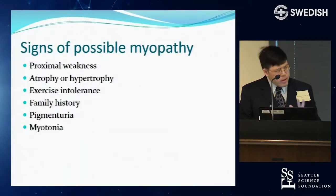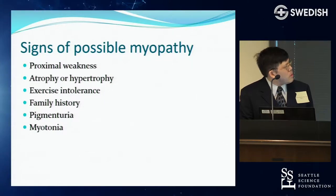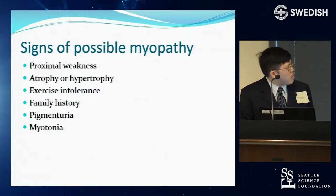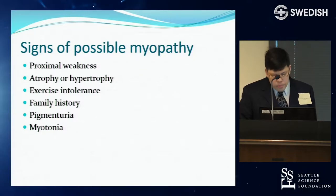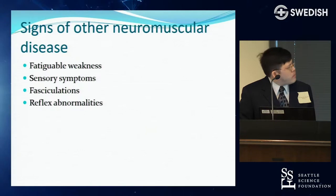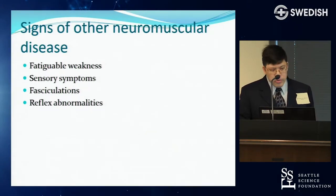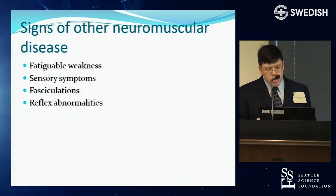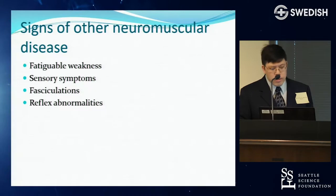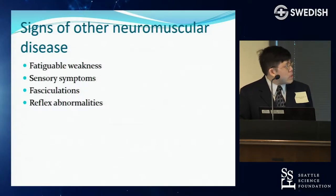The main signs suggestive of myopathy include proximal weakness, exercise intolerance associated with metabolic myopathies, family history suggesting muscular dystrophy, and myotonia associated with myotonic dystrophies. Other signs can point elsewhere: fatigable weakness suggests myasthenia; sensory symptoms rule out a muscle problem; fasciculations point toward motor neuron disease; reflex abnormalities suggest neuropathy.